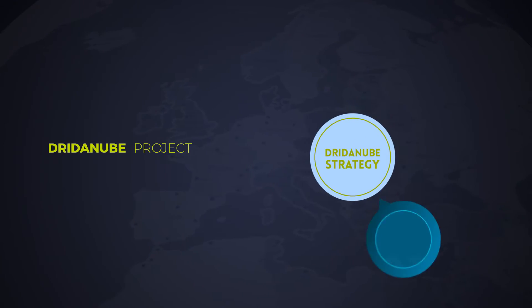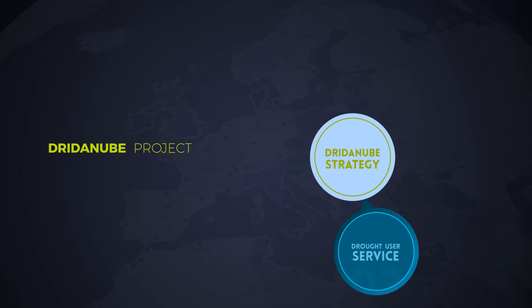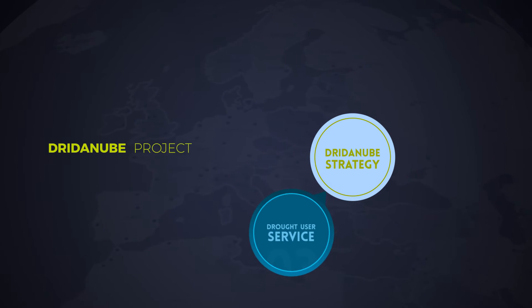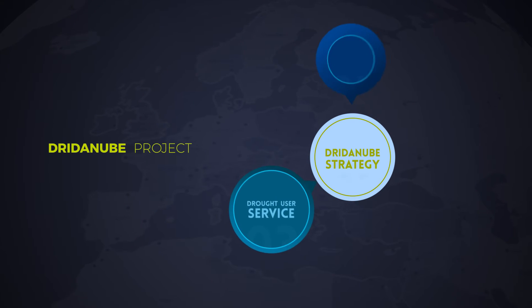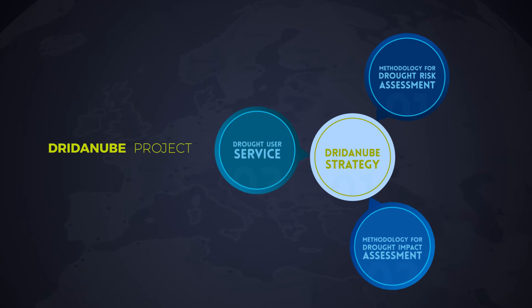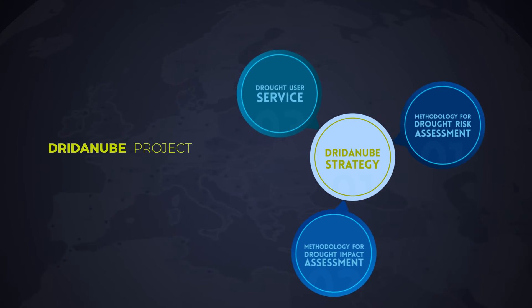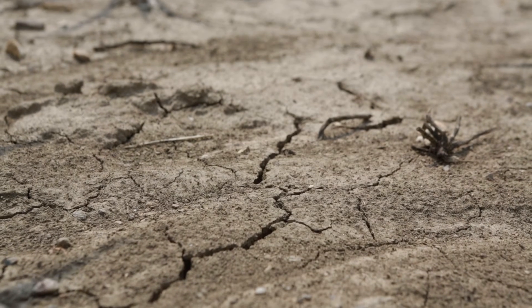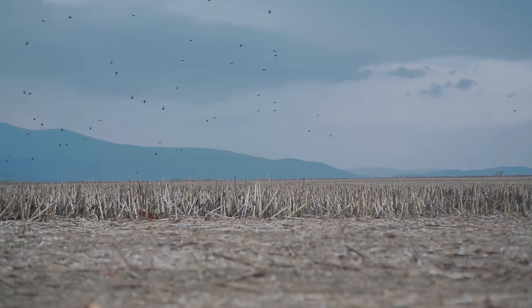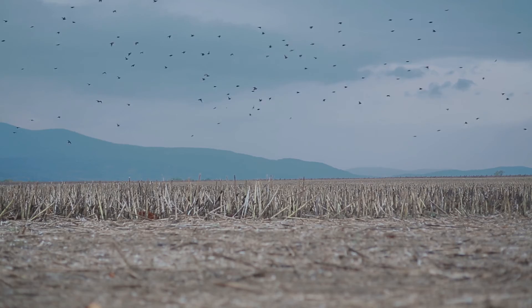The Dry Danube project will harmonize monitoring and early warning systems and unify different approaches for risk and impact assessments. The current slow reaction before and during drought will be accelerated, leading to quicker recovery and better preparedness for the next drought.